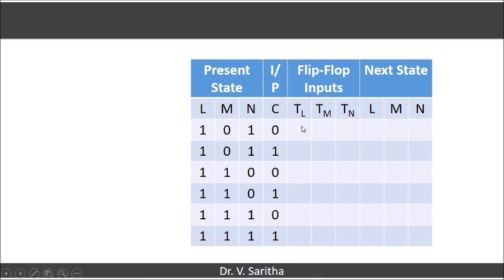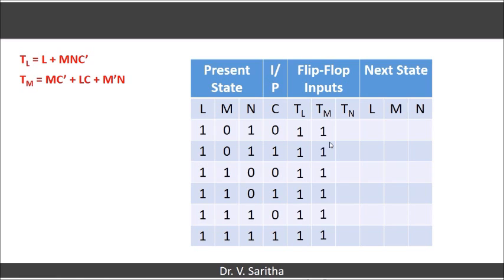In order to get the next state, we are supposed to get the flip-flop inputs Tl, Tm, and Tn. Already, suppose in the previous video if you see, we are getting the expressions for Tl, Tm, and Tn in this fashion.